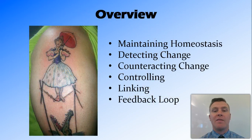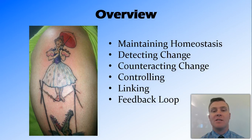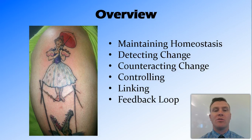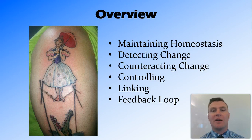In this video, we've looked at the two steps in maintaining homeostasis: detecting change, which is done by the receptors, and counteracting change, which is done by the effectors. We've looked at how the nervous system controls the stimulus-response pathway through control centres in the central nervous system, and how the peripheral nervous system joins all the components of the stimulus-response pathway together. And we've looked at representing this diagrammatically in a feedback loop, as well as the feedback loop with positive and negative feedback — the figure of eight.